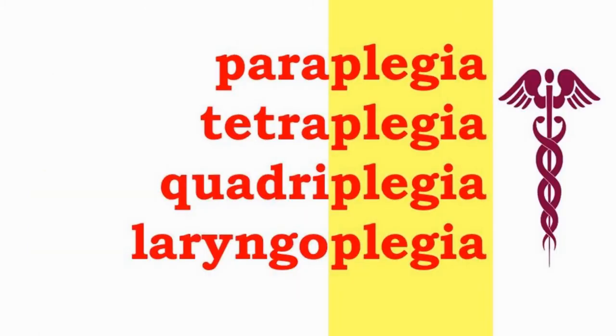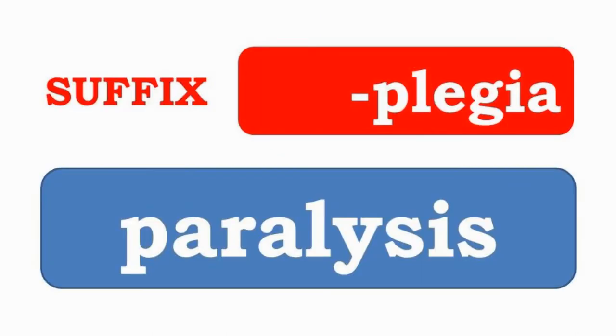Paraplegia, tetraplegia, quadriplegia, and laryngoplegia have the suffix -plegia, which indicates paralysis.